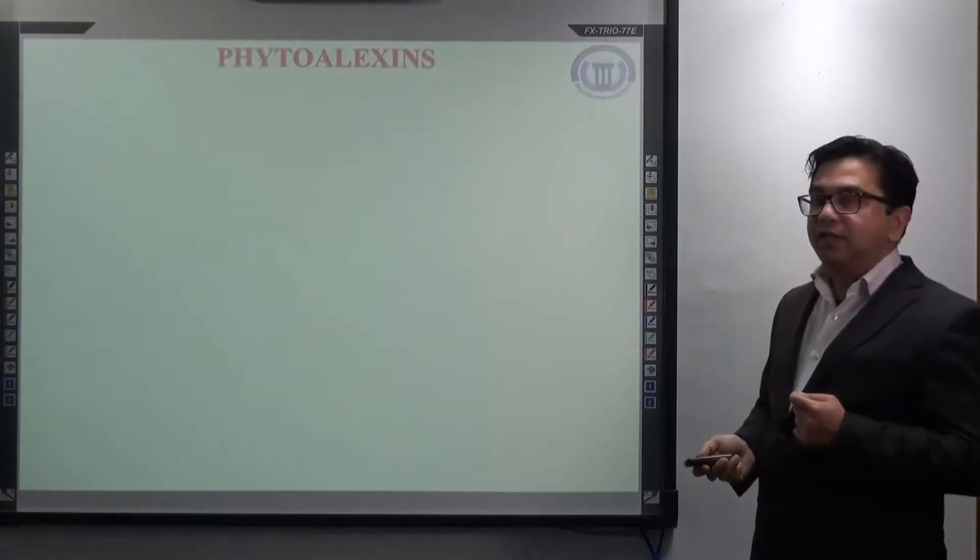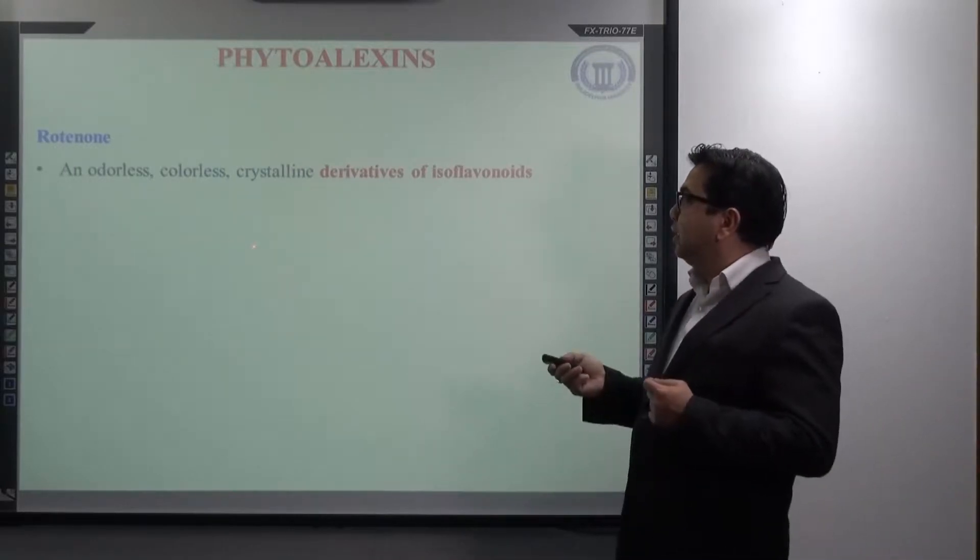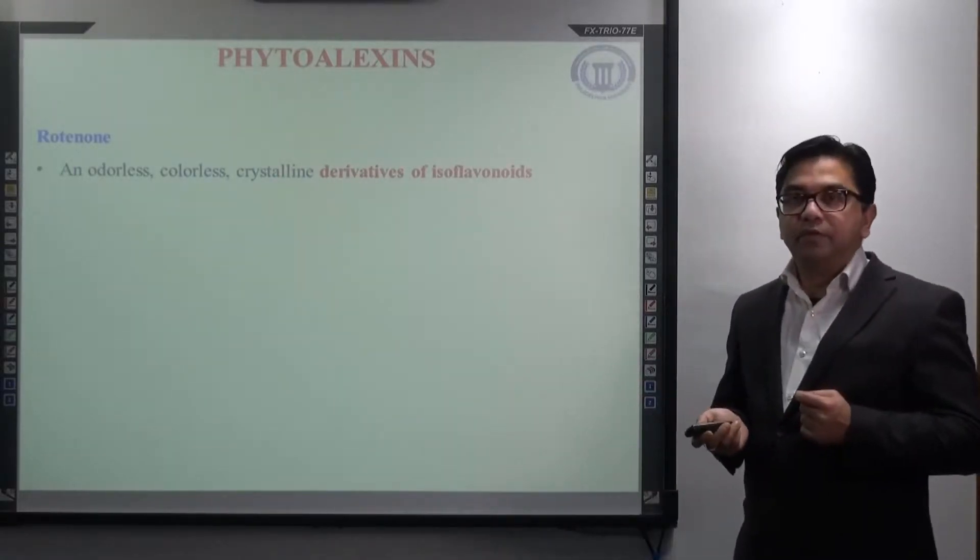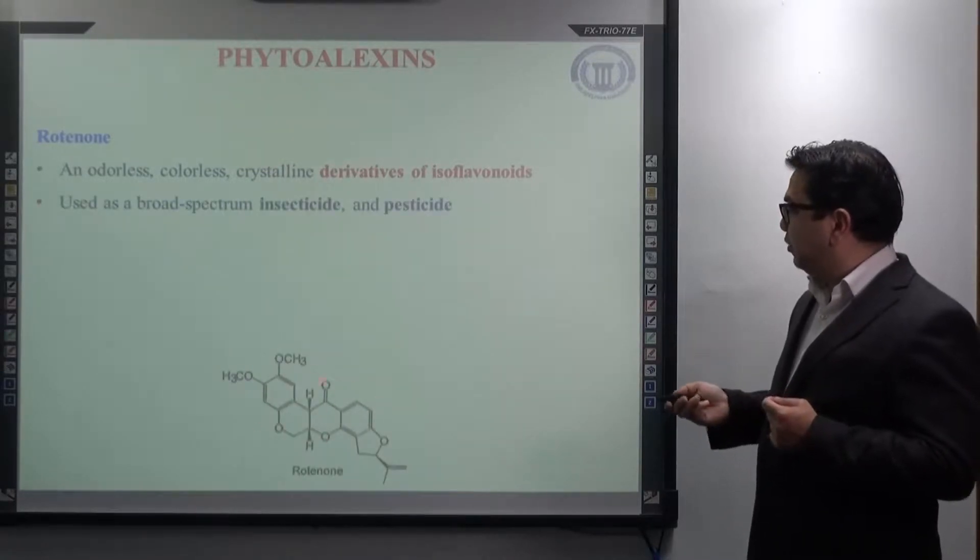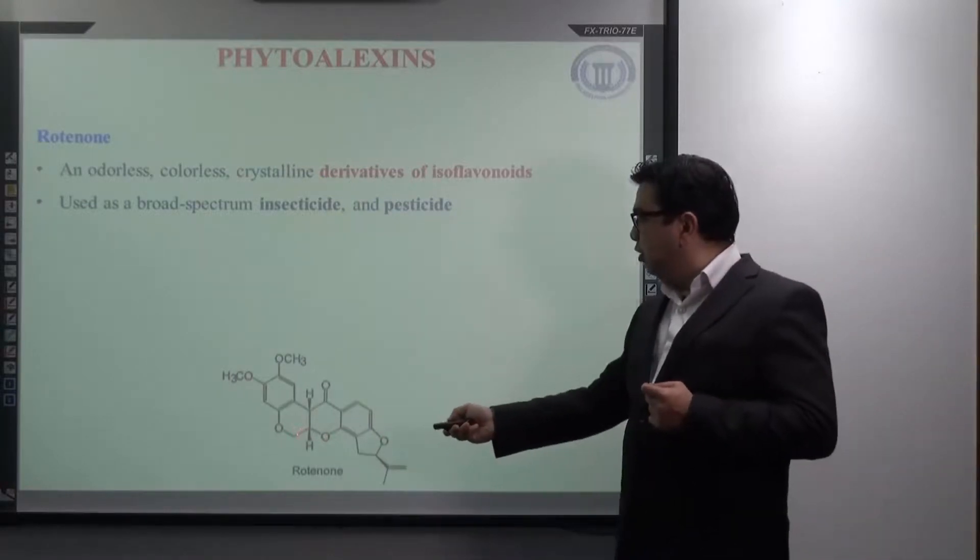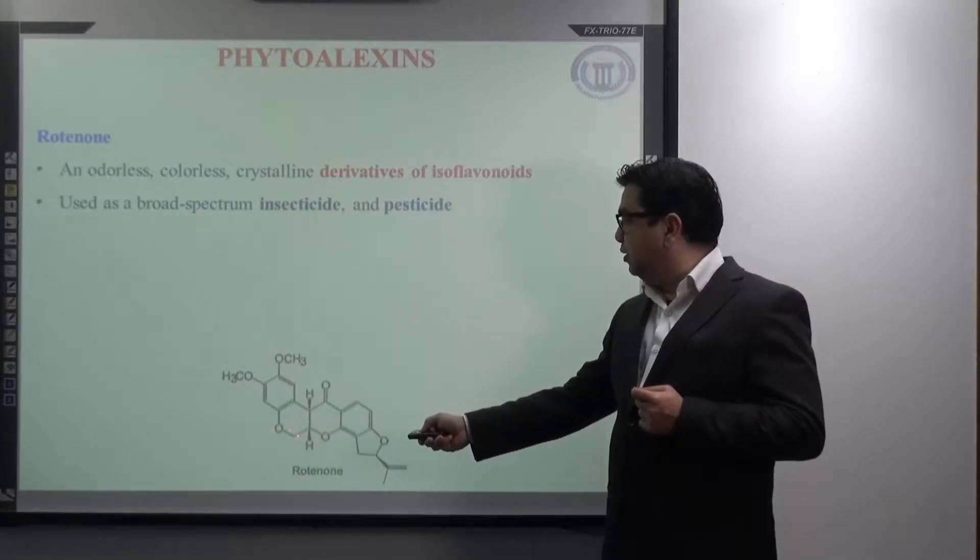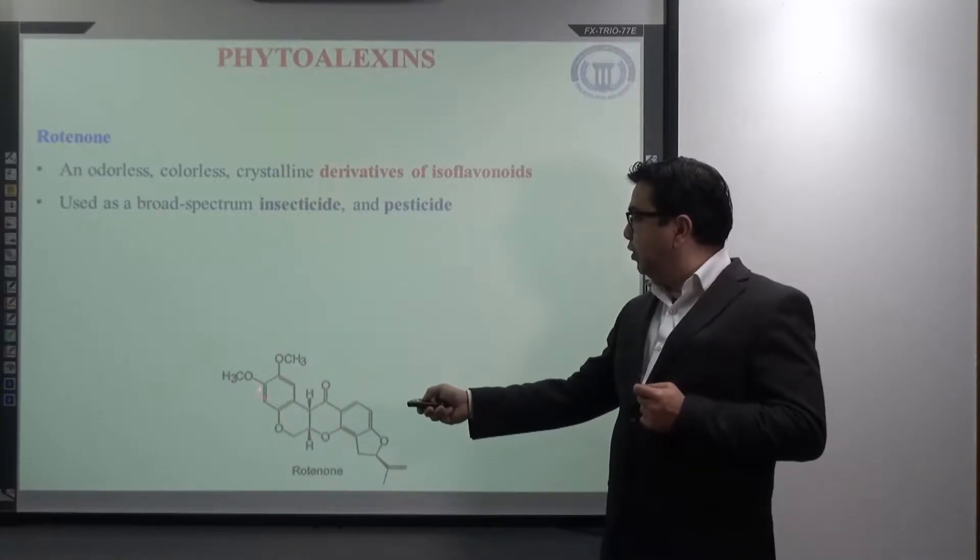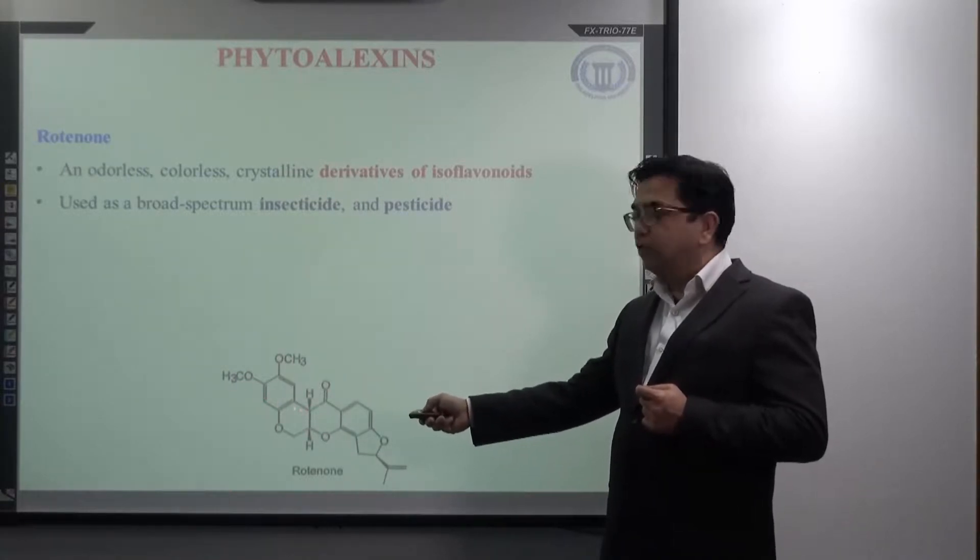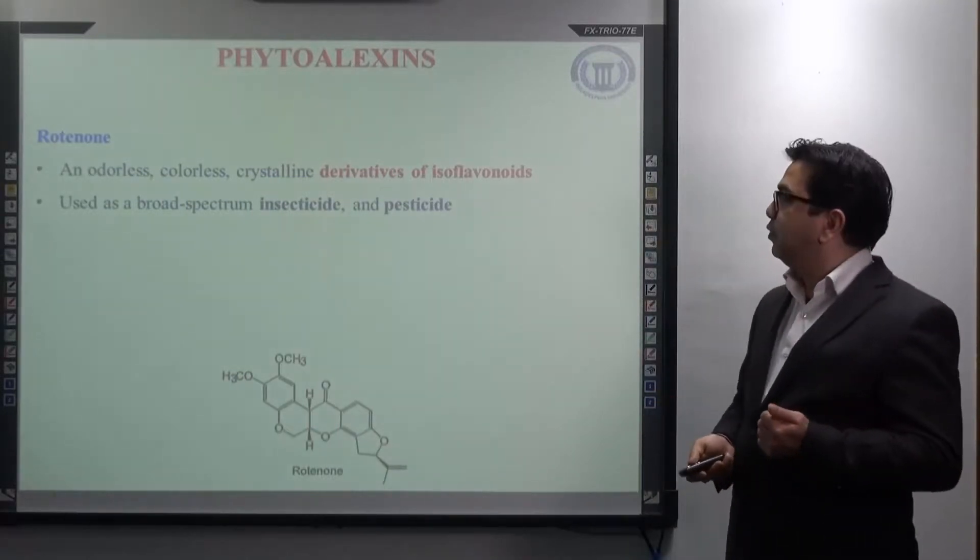Next example of phytoalexin is rotenone. It is an odorless, colorless, crystalline derivative of isoflavonoid. This is the structure of rotenone. Here also, again, you see, if you remove this bond, this two bonds, this bond between this ring C and this oxygen, you can see the numbering from here, one, two, three, the phenyl ring, aromatic ring, is attached to the third position of ring C. This is also an example of derivative of isoflavonoid.